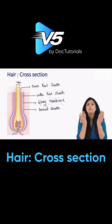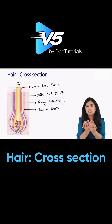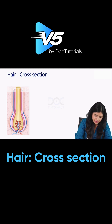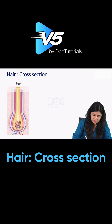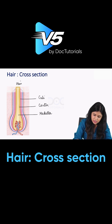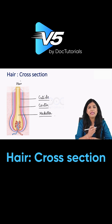The hair is enveloped by the inner root sheet, the outer root sheet, the glassy membrane, and the dermal sheet. Now coming to the hair itself — this yellow colored structure here. In this hair we have further three layers: there is the medulla, which is in the center, surrounded by the cortex, and the third layer of the hair is the cuticle. So in the hair we have the medulla, cortex, and the cuticle.